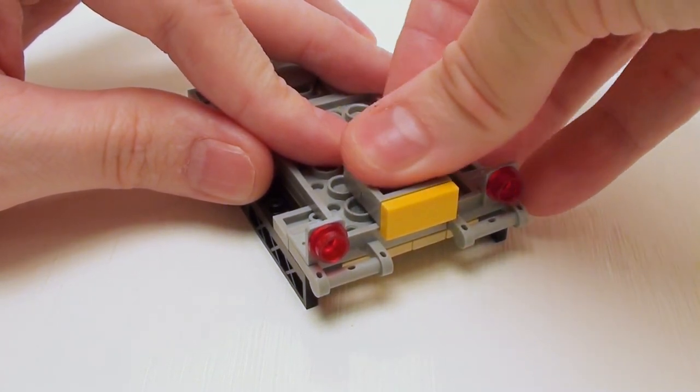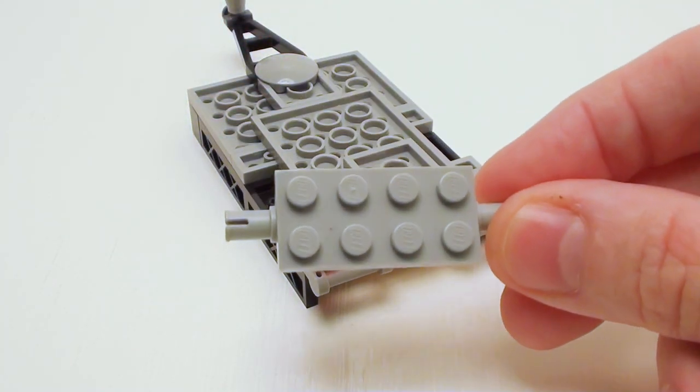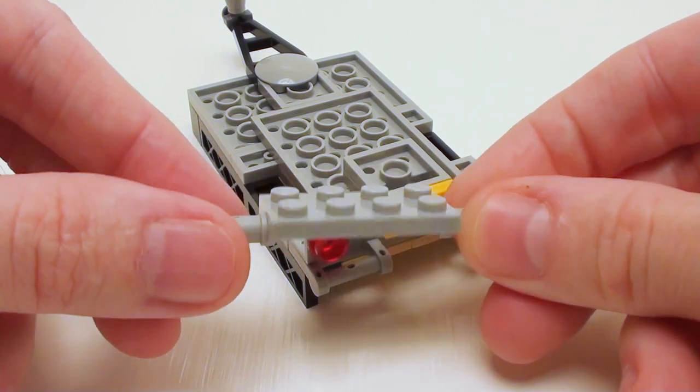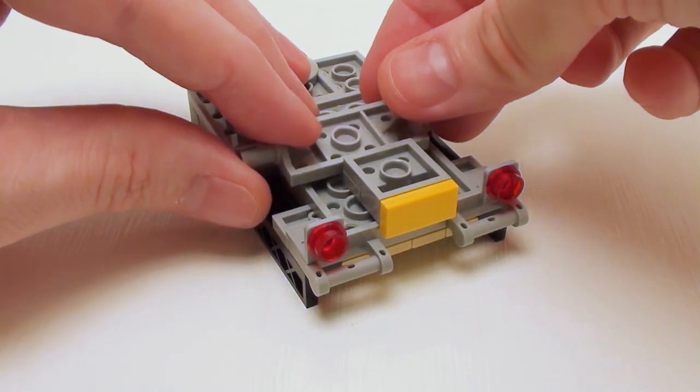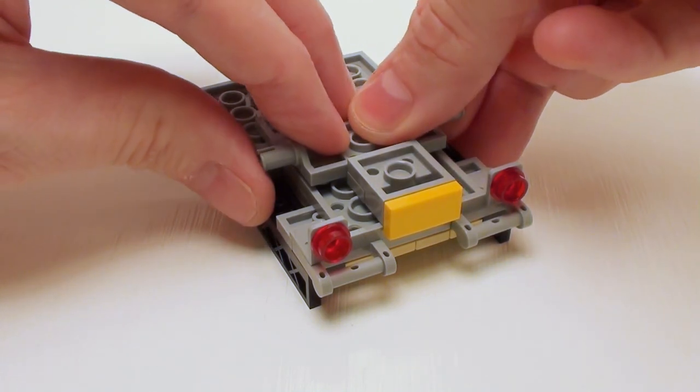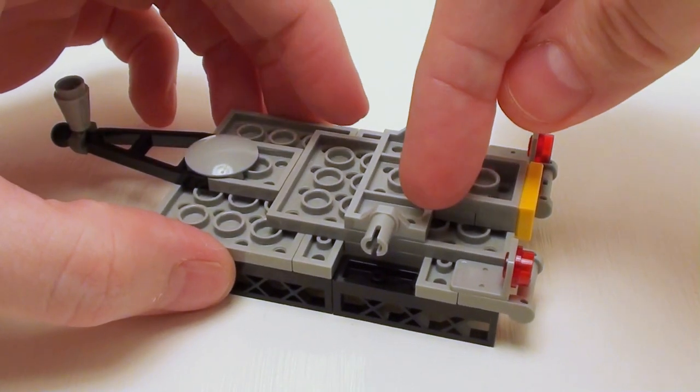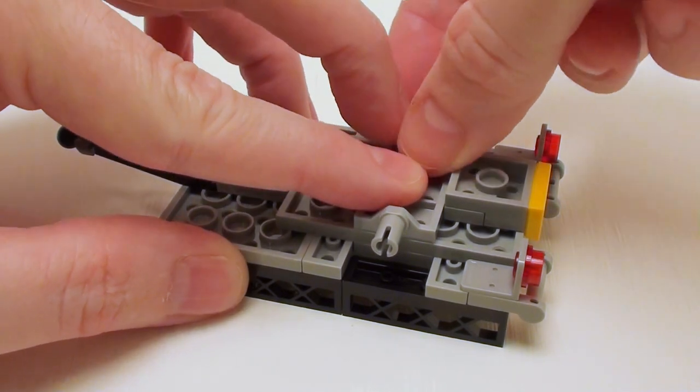Press that down firm. Take a 2 by 4 plate with two Technic pins. We're going to place this right next to our license plate assembly right above these openings. Those are going to be our wheel wells for our tires.